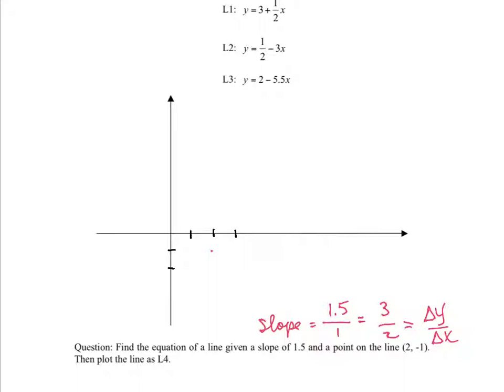So from this point, we move... Let's do it this way: 3 over 2. So we're going to move 2 over: 1, 2. And up 3: 1, 2, 3. So we put a dot there and then join the dots. In joining the dots, I see that the line will extend down to the y-intercept.